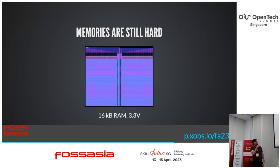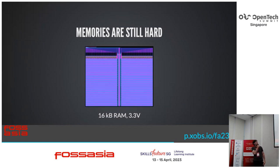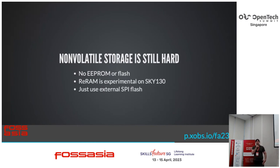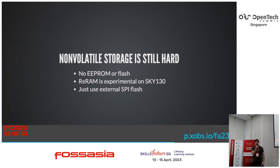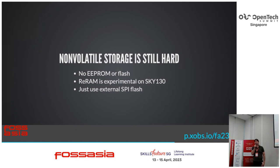The OpenRAM project is designed to pack memory as tightly as possible, and oftentimes memories actually violate the design rules because they're regular enough that you know there's no interaction between nearby transistors. This is an example of just 16 kilobytes of RAM at 3.3 volts on Sky130 from the OpenRAM project. Non-volatile storage is also a bit of a problem — we don't have anything like Flash or EPROM. Sky130B has resistive RAM, which is somewhat experimental. The current solution is just to use an external SPI Flash, which is what a lot of processors like Gigadevices and ESP chips use anyway.